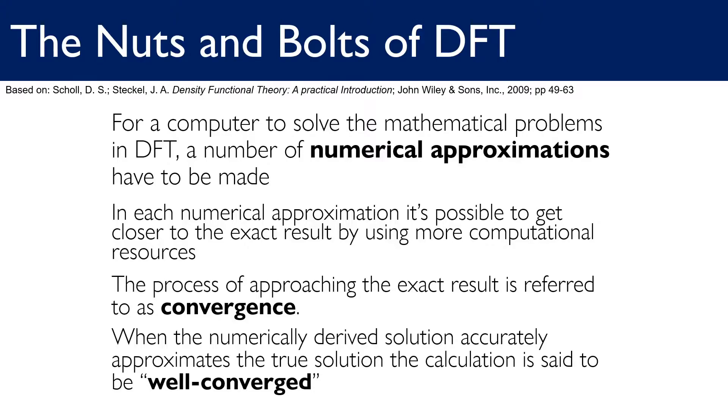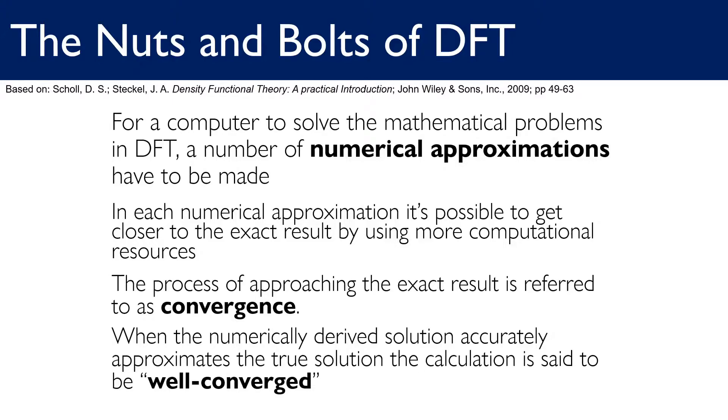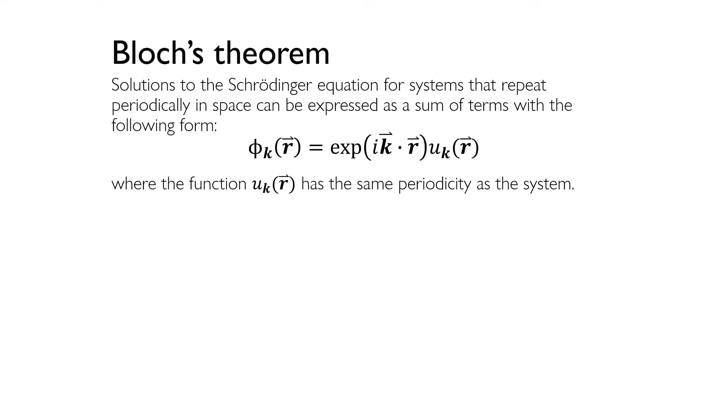It turns out, it's often more convenient to solve many of the mathematical problems posed by DFT in terms of reciprocal space rather than in terms of real space. The reason for this is a consequence of Bloch's theorem. Bloch's theorem states that the solutions to the Schrodinger equation for systems that repeat periodically in space, such as metal crystals, are able to be expressed as a sum of terms of the following form. Phi k equals e to the i k dot r times a function u k.